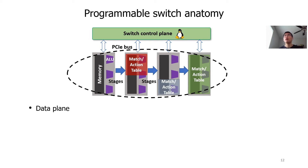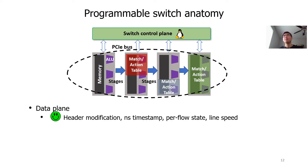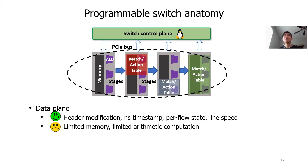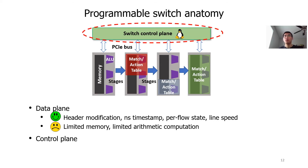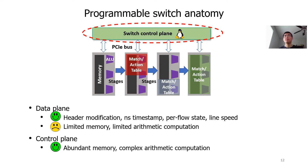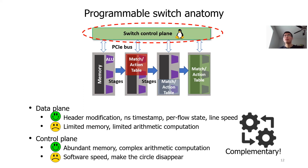The data plane consists of programmable ASICs. It can do header modification, maintain per-flow state, and provides nanosecond-level timestamps. It can run at line speed. However, the data plane has very limited memory and can only do limited arithmetic computation. The control plane is a general-purpose CPU. It has abundant memory and can do complex arithmetic computation. However, the control plane can only run at software speed. As we can see, the data plane and control plane are complementary to each other.